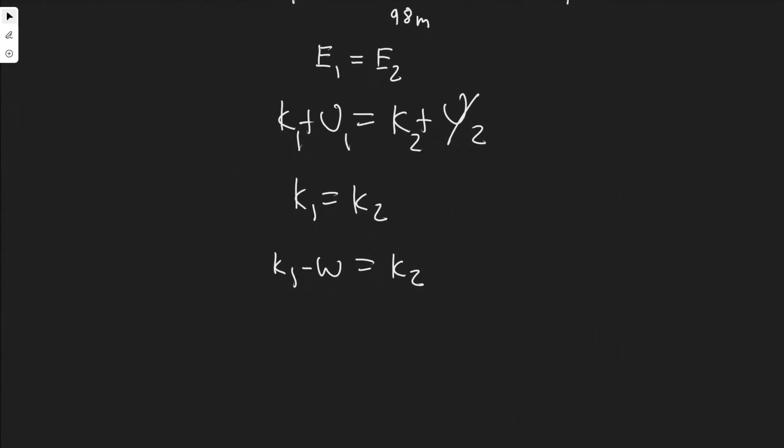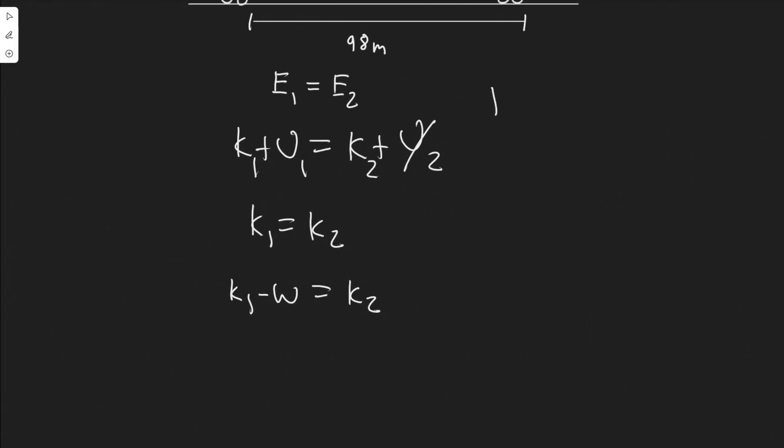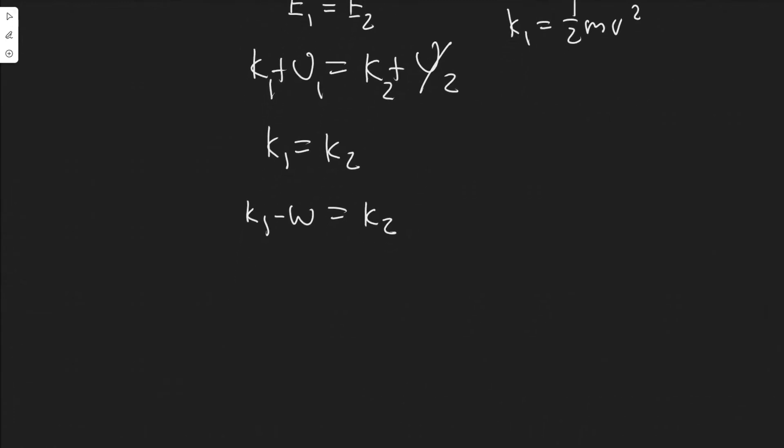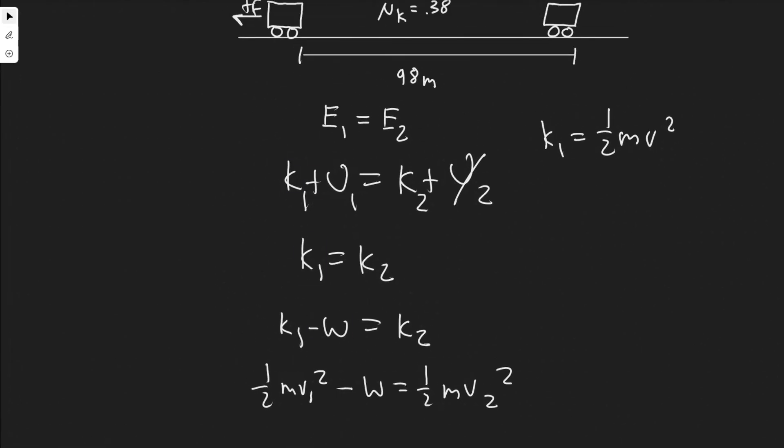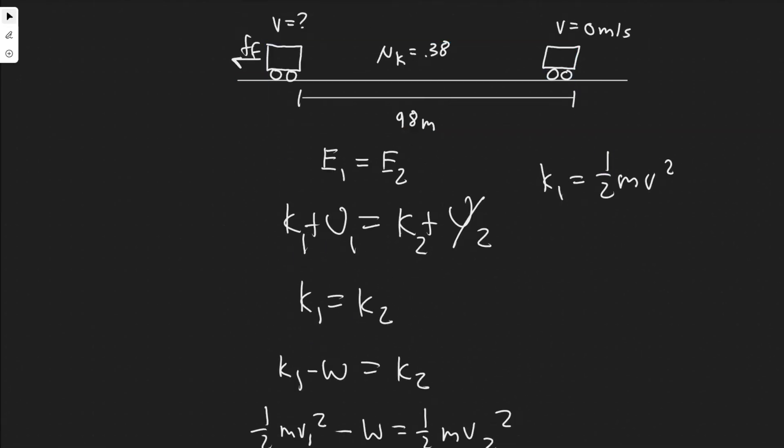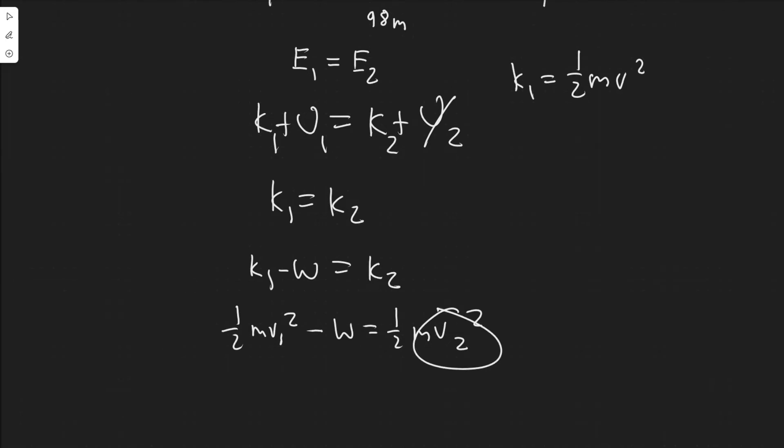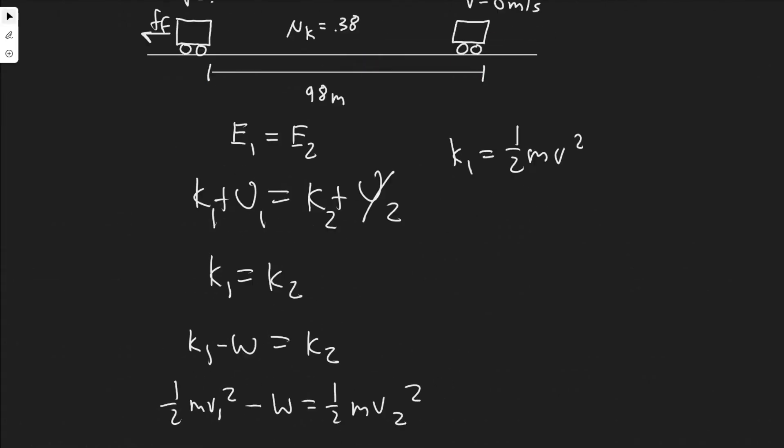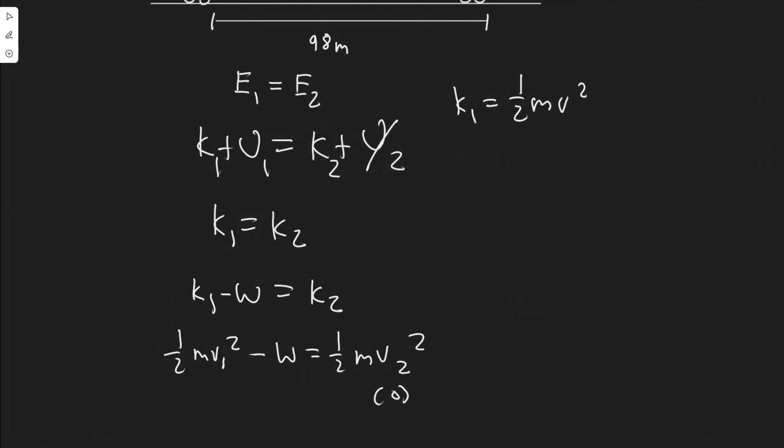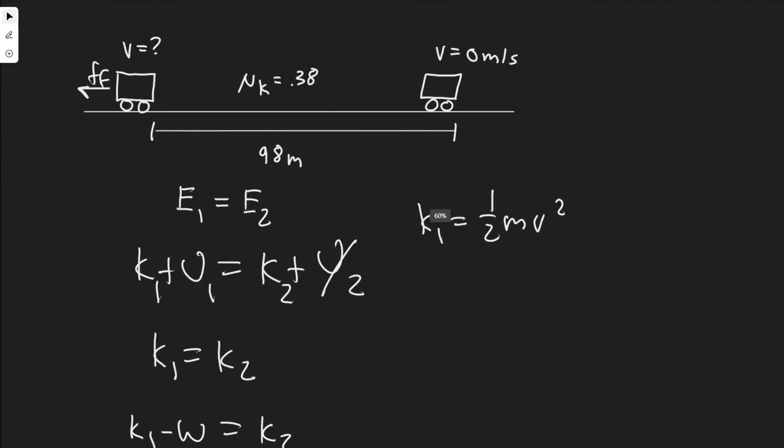The formula for kinetic energy is 1/2 MV². We can write this as 1/2 MV1² - W = 1/2 MV2². We're trying to solve for V1, the velocity at the beginning. Notice the velocity at the end is actually zero, so V2 is zero, meaning this whole term goes to zero because we come to a stop at the end from the brakes.